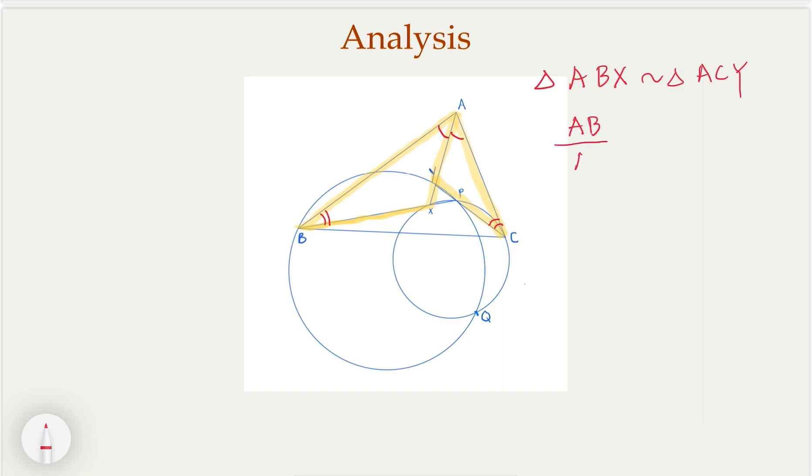So from here, we know that the sides are proportional. In other words, AB over AC, the corresponding here would be AX and versus AY. So we have this conclusion.